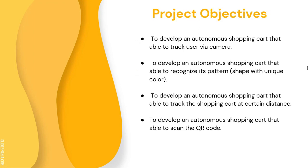Next is the project objectives. There are four project objectives. The first one is to develop an Autonomous Shopping Cart that is able to track the user via camera. Next is to develop one that is able to recognize its pattern, which is a shape with a unique color. Next is to develop one that is able to track the shopping cart at a certain distance. And the last one is to develop one that is able to scan a QR code.